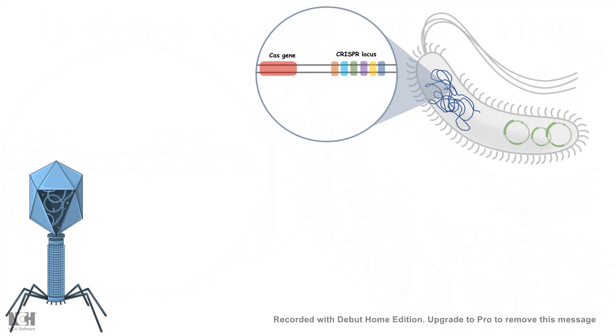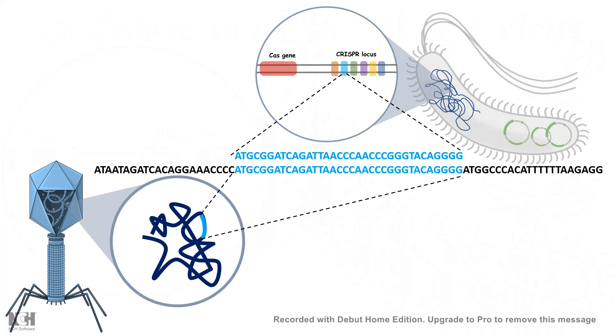Now the sequence information of the CRISPR locus is strikingly similar to the sequence information present in the phage genome. Scientists scratched their head: why are these sequence informations identical and similar? What is the consequence or the cause of that?